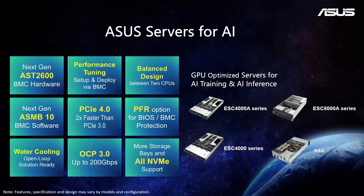On the other hand, ASUS is the first vendor to introduce the AST2600 BMC chip for out-of-band management. The performance has improved over 40% compared with the last-generation AST2500. It also makes management more powerful and useful along with AMI BMC firmware. ASUS has also introduced hardware silicon root of trust in all servers to be compliant with NIST standards.